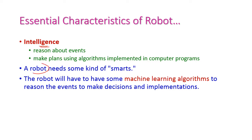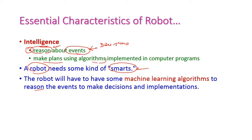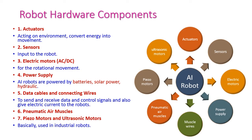The third characteristic is intelligence. Because of intelligence, the robot works as a smart robot. This involves two aspects: first, reasoning about events — the robot needs to take decisions about events; second, making plans using algorithms. These algorithms are machine learning algorithms, and because of them the desired actions are implemented.